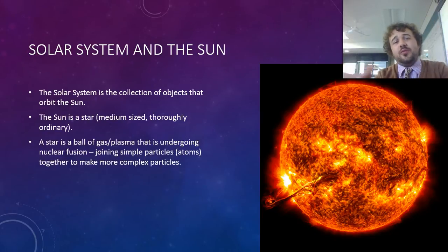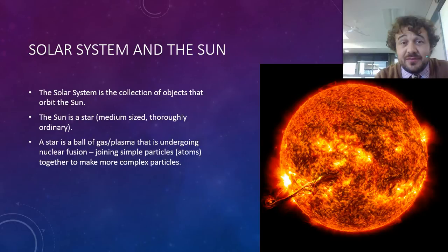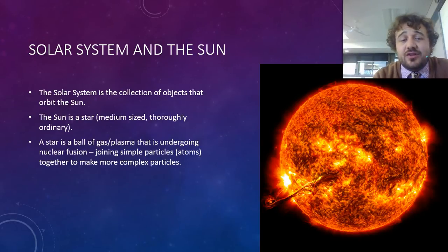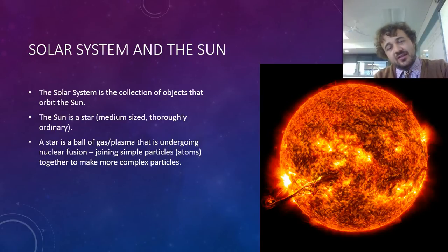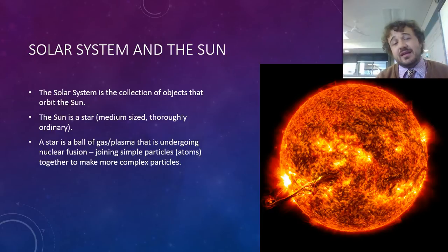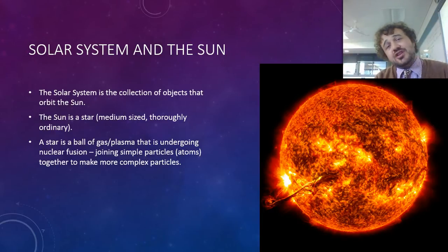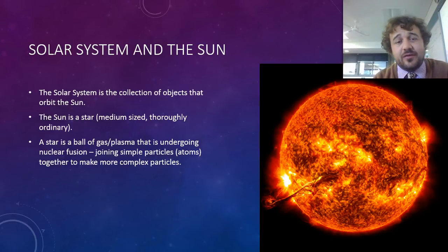Now, it's a ball of plasma — plasma is the proper scientific word for it. It's a ball of plasma that's undergoing nuclear fusion. What this means is really simple particles come together and because of the heat and the pressure they get pushed together so hard that they become one particle. Fusion means they're joined together — so simple particles like hydrogen and helium get pushed together to make more complex particles like lithium and beryllium and so forth.